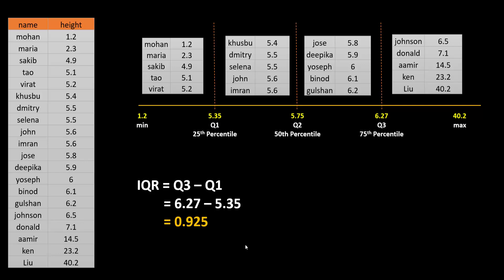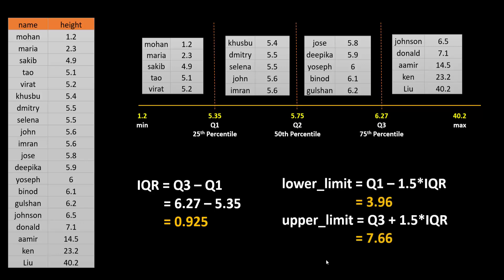Now to remove outliers you need to come up with a lower and upper limit. Your lower limit will be Q1, the 25th percentile, minus 1.5 times IQR. IQR is just a certain distance — you take that distance, multiply by 1.5 to add half into it, and then extend from Q1. So from 5.35 minus 1.5 times IQR you get a lower limit of 3.96.